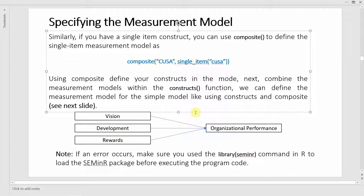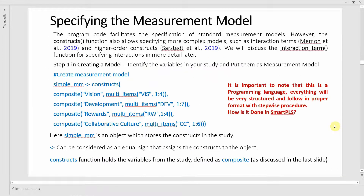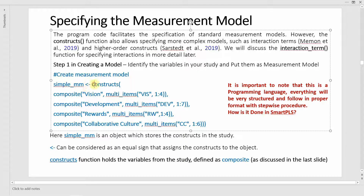The first step is measurement model specification. The program code facilitates the specification of standard measurement models. The constructs function also allows specifying more complex models using interaction terms or higher order constructs, but for now we keep it simple. Here is the code we are going to use to specify our measurement model.